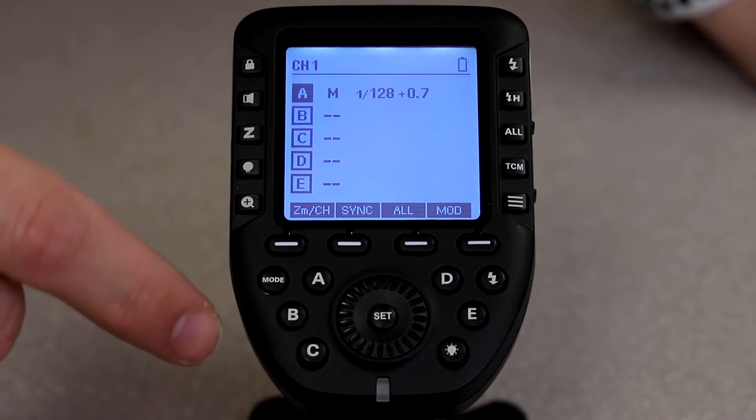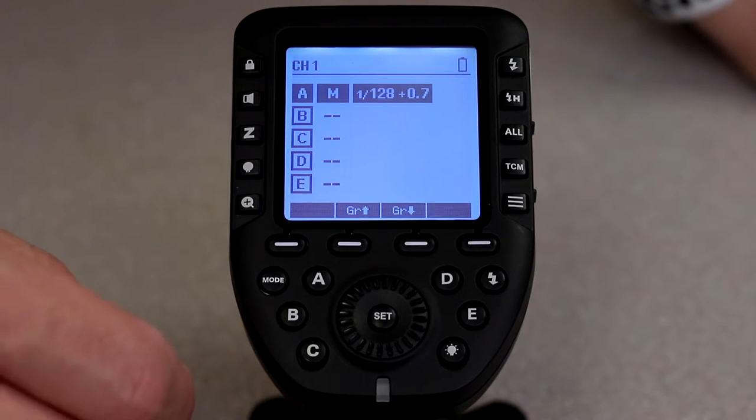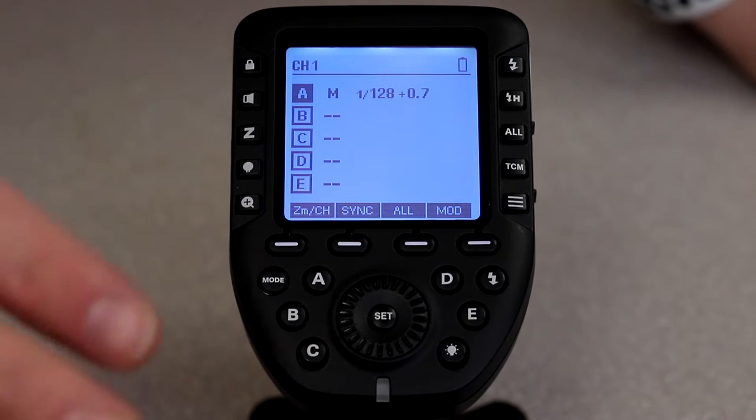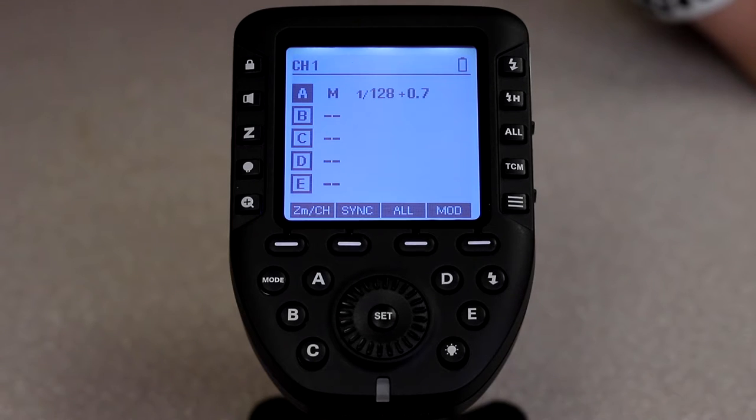So we're going to take a look at the Flashpoint wireless transmitter, the R2 Pro. There's a lot of different options on here, so I'll try to make this as simple as possible. Tons of buttons - we do not need to know about all of these buttons.